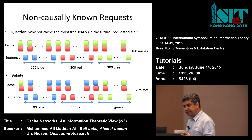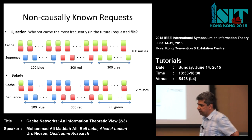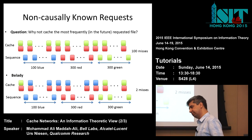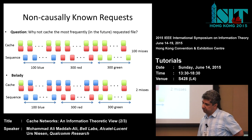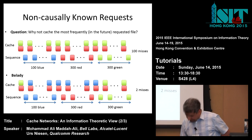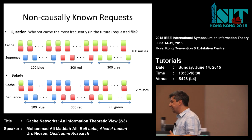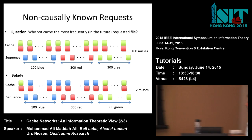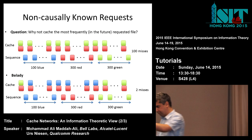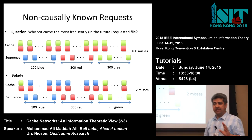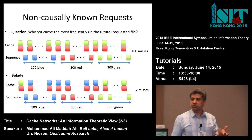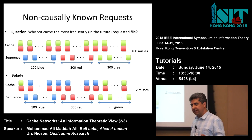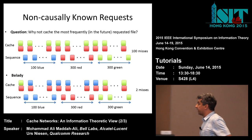Of course, this is a non-realistic case. A student points out that you don't necessarily need the entire future sequence — you only need to know which currently cached file will be requested farthest next. That's correct. But we start with this basic structure. This algorithm is called the Bélády algorithm, the optimal algorithm, or the offline algorithm. It is used as a baseline for cache systems.